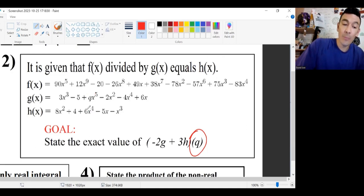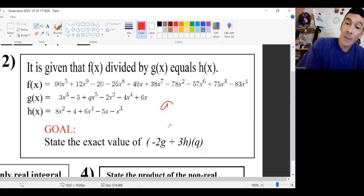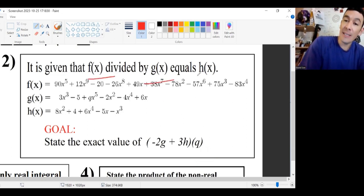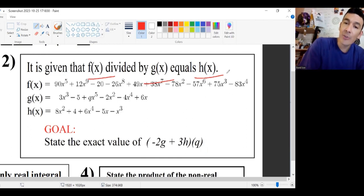Let me show you probably the fastest way for you to discover what little q is so that you can actually begin the goal. So notice they say that f divided by g equals h. Just watch.